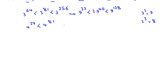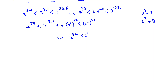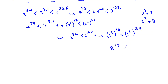For the base-4 expressions, we can write 4 as 2 squared. So 4 to the 27 is 2 squared to the 27, which equals 2 to the 54. And 4 to the 81 is 2 squared to the 81, which equals 2 to the 162. Then, writing 2 to the 54 as 2 cubed to the 18 gives 8 to the 18, and 2 to the 162 as 2 cubed to the 54 gives 8 to the 54.